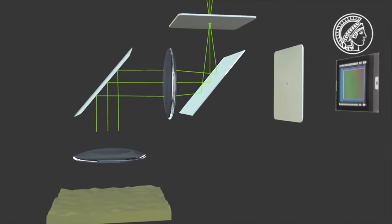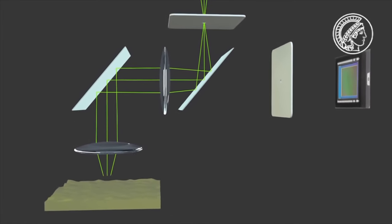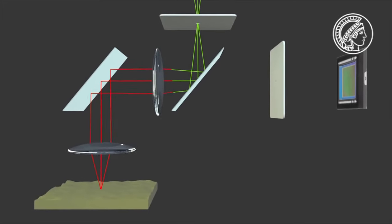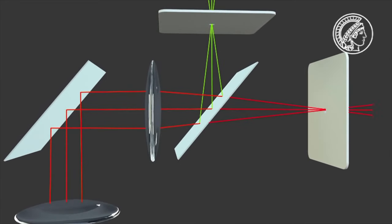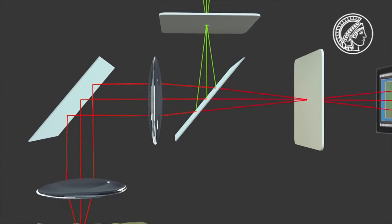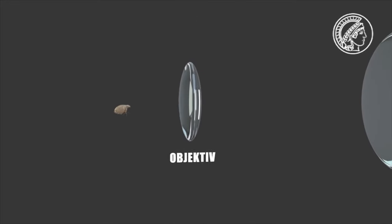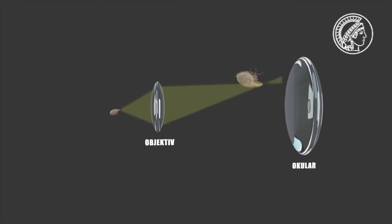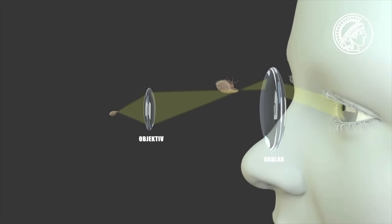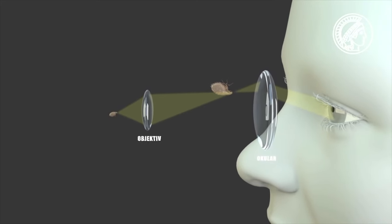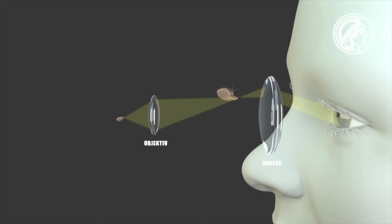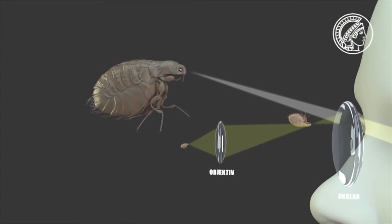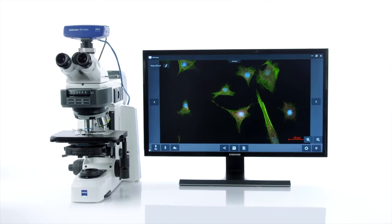Of course, this device is much more complicated. A microscope is a combination of lenses with detailed optical parameters assembled in the proper order. However, the principle of operation remains the same. Light in the visible wavelength range either passes through the object or is reflected from the surface, and passing through a system of magnifying and focusing lenses, goes first into the eyepiece and then into our eye.